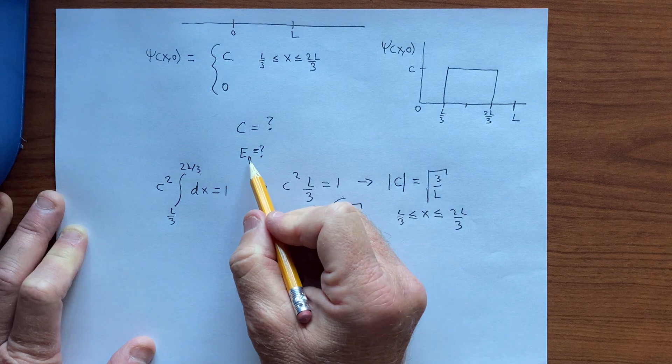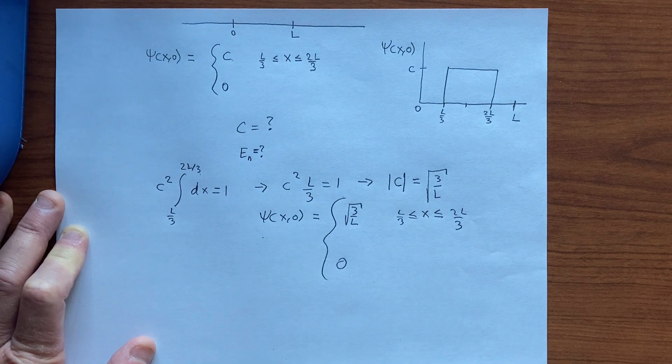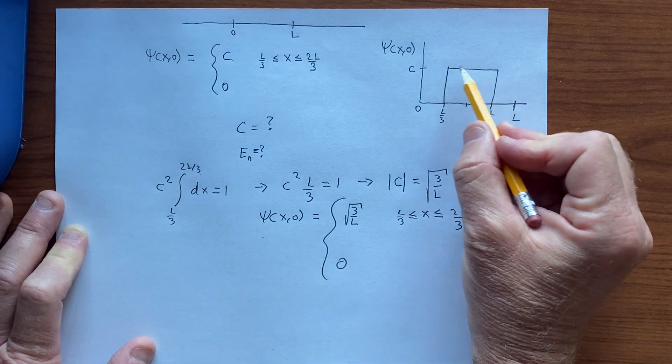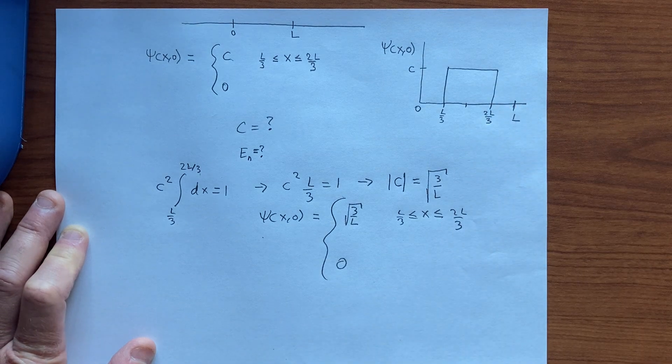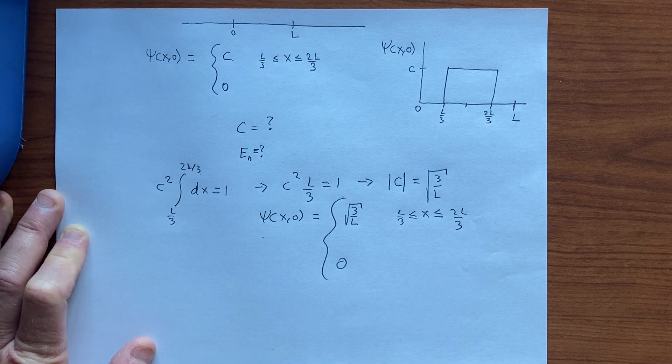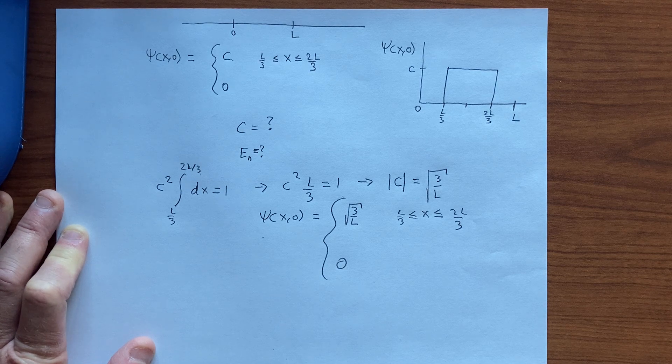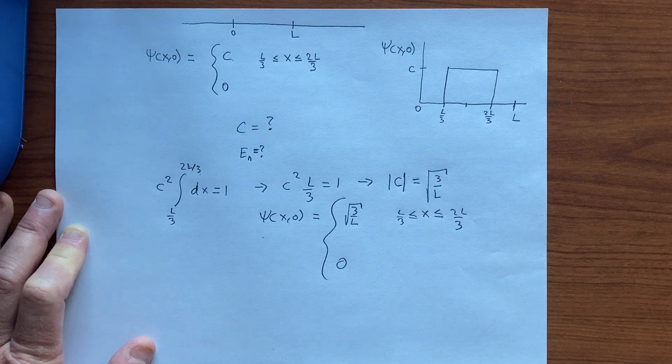And then we can ask what are the values of energy that you can obtain in a measurement, and for this we want to be able to recognize that this function, which is discontinuous here, is obtained by an infinite sum of energy eigenfunctions. So we want to break this up into energy eigenfunctions.